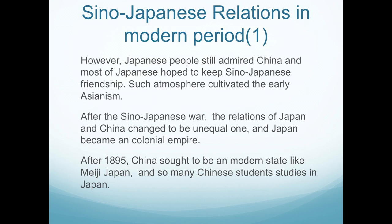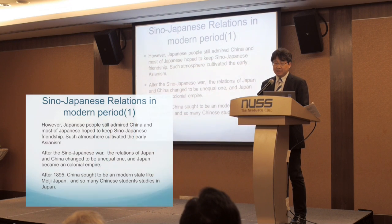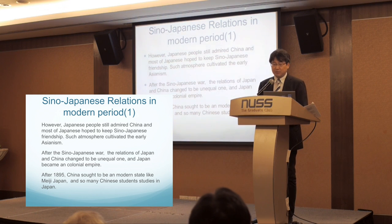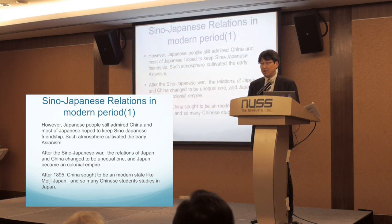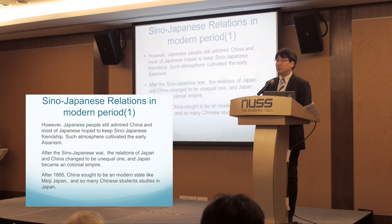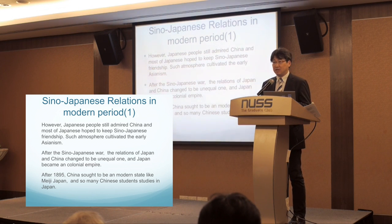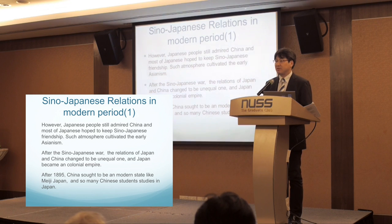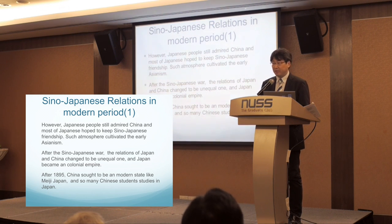In the 1880s and into the first decades of the 20th century, Japanese people still admired China, and most hoped to maintain Japanese-Chinese friendship. This atmosphere cultivated early Asianism in the 1880s. Some early Chinese diplomats in Japan had many opportunities to talk with Japanese intellectuals by writing Chinese characters, and there are many archives about it that scholars in China and Japan are now analyzing.